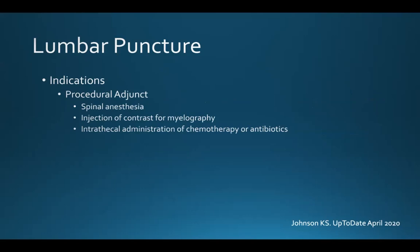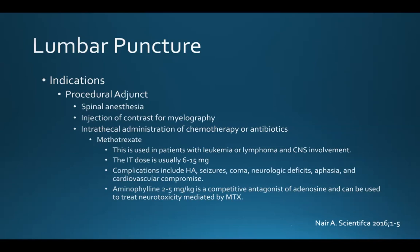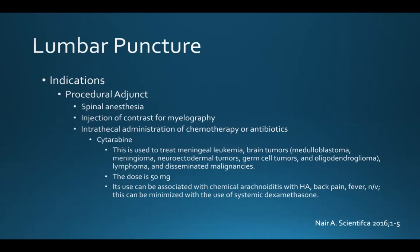A lumbar puncture can also be used as a procedural adjunct during spinal anesthesia, the injection of contrast for myelography, or the intrathecal administration of chemotherapy or antibiotics. Right now we're principally injecting two medications intrathecally. The first is methotrexate, used in patients with leukemia or lymphoma and CNS involvement. The intrathecal dose is usually 6 to 15 milligrams, and complications may include headache, seizures, coma, neurologic deficits, aphasia, and cardiovascular compromise. Aminophylline at 2 to 5 milligrams per kilogram is a competitive agonist of adenosine and can be used to treat methotrexate-mediated neurotoxicity.